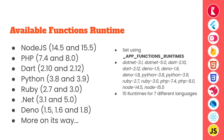AppWrite currently has 15 different active runtimes across 7 different languages, including Node.js 14.5 and 15.5, PHP 7.4 and 8.0, Dart 2.10 and 2.12, Python 3.8 and 3.9, Ruby 2.7 and 3.0, .NET 3.1 and 5.0, and Deno 1.5, 1.6, and 1.8 — with more on the way.